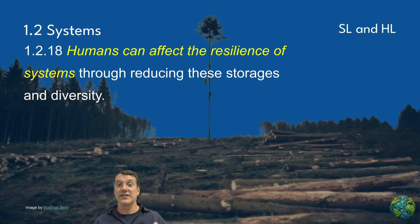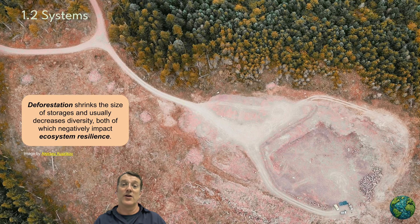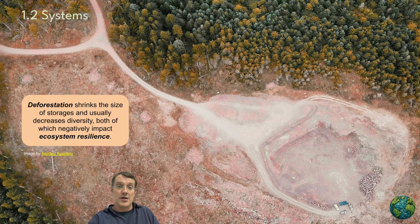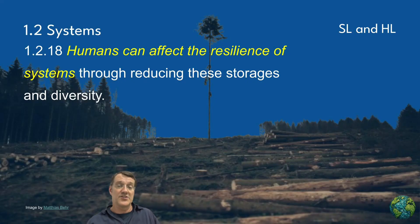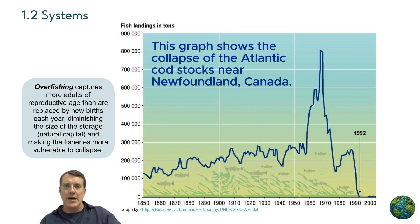Human activities can significantly affect the resilience of natural systems, often by reducing both the diversity and the size of those key storages. Deforestation is a prime example of this dual impact. When forests are cleared, we not only reduce the diversity of plant and animal species, but we also diminish the important storages of carbon, water, and nutrients in that standing wood, making the ecosystem less able to withstand future disturbances like drought or disease outbreaks. Similarly, overfishing can reduce both the diversity and the biomass of marine ecosystems, making them more vulnerable to other stressors like pollution or climate change. By understanding these impacts, we can work towards more sustainable practices that maintain and enhance the resilience of natural systems.